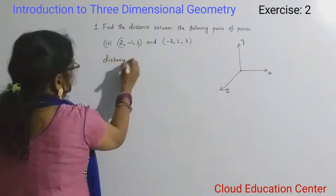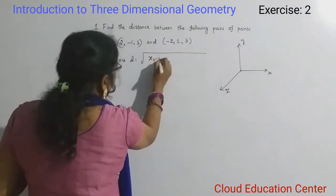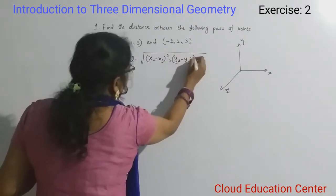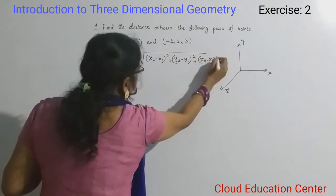Distance D equals square root of (x2 minus x1) whole square, plus (y2 minus y1) whole square, plus (z2 minus z1) whole square.